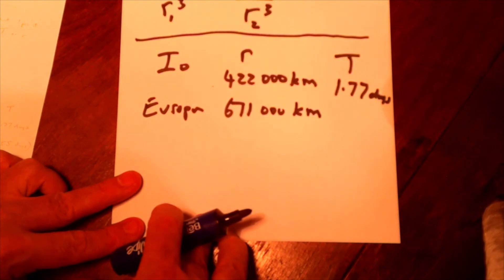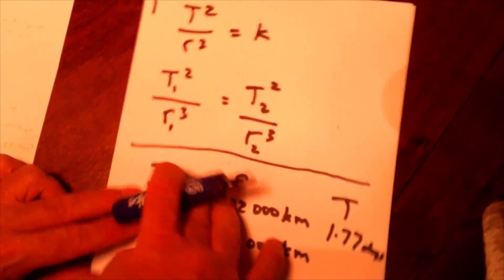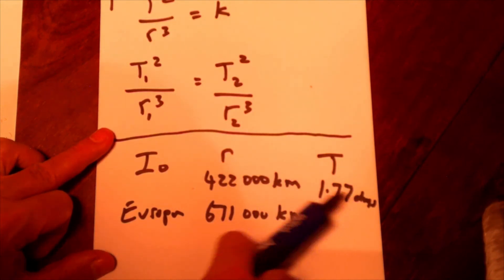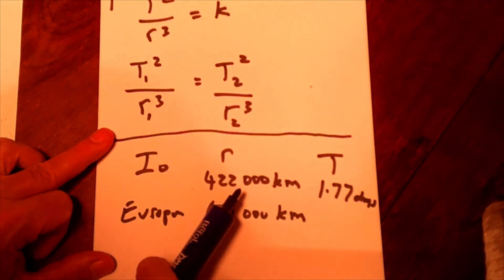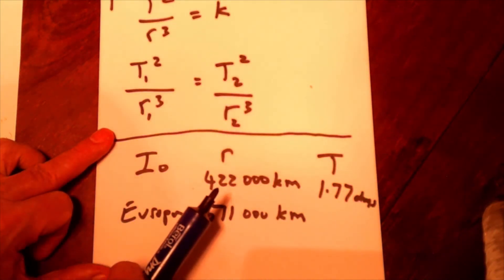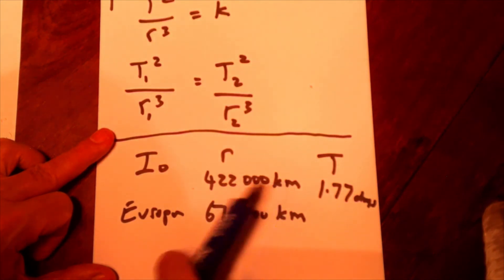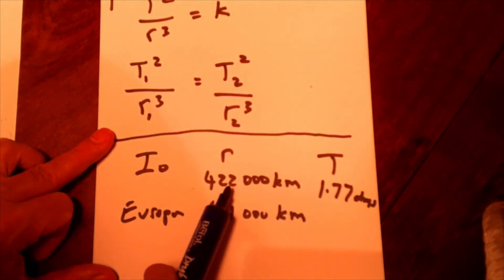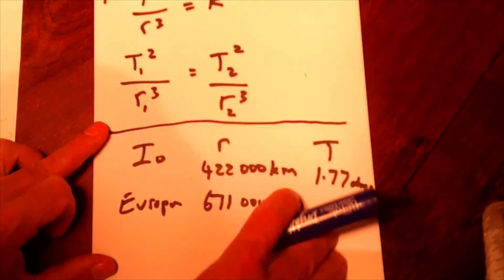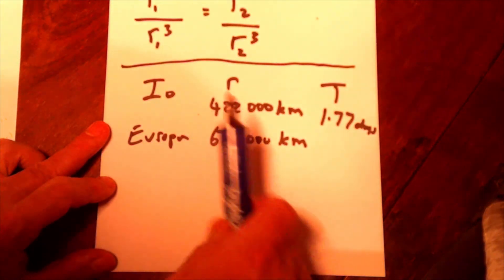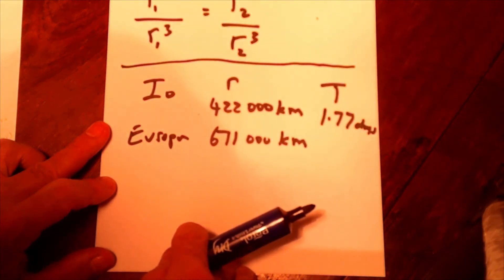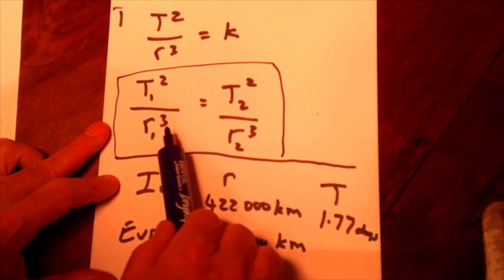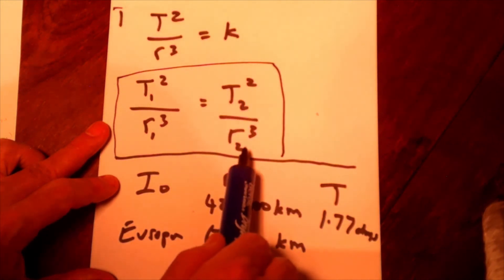So, how do I do that? Well, what I could do is work out the value of the constant. So, using the information for Io, I could do T squared divided by R cubed, and that would give me the value of the constant K. If I was doing that, by the way, I'd just use 422. I wouldn't bother with 1,000 kilometres, because all of that's going to cancel. So, I would just do 1.77 squared divided by 422 cubed. Get the value of the constant, then use the same equation, knowing K, to work out the value of T. The way that I would probably do it, would be to use this equation here. T1 squared over R1 cubed equals T2 squared over R2 cubed. And let's put all the information in.